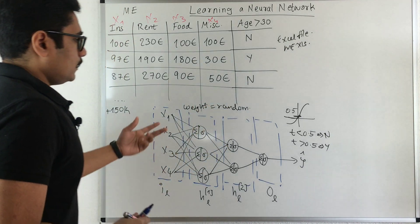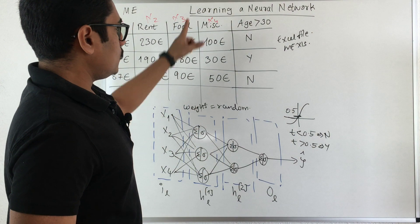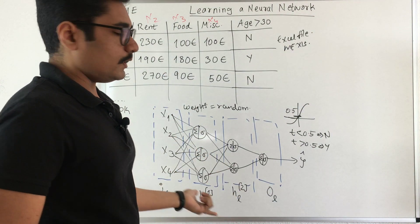Essentially, when we build a neural network, our major goal is to learn these weights. Learning these weights and biases are the major goal that we achieve by building our neural network.